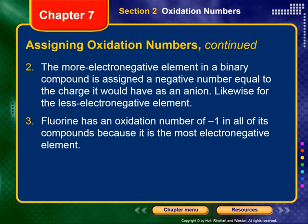Number two: the more electronegative element in a binary compound is assigned a negative number. The more electronegative element — further to the right and up on the periodic table — is assigned a negative number equal to the charge it would have as an ion. Now remember, this is for molecules, meaning covalently bonded, all nonmetals. These are not anions; they are covalently bonding. But we give it an oxidation number equal to the charge it would have if it were an anion.